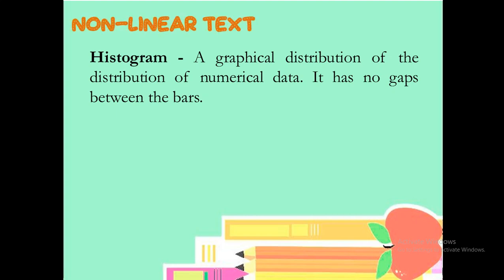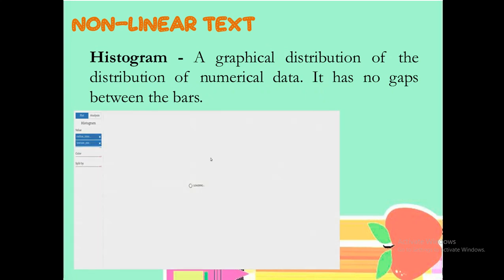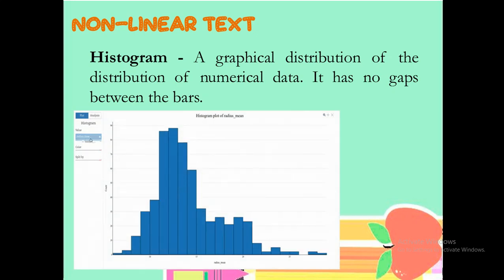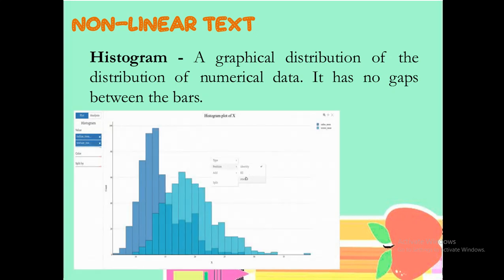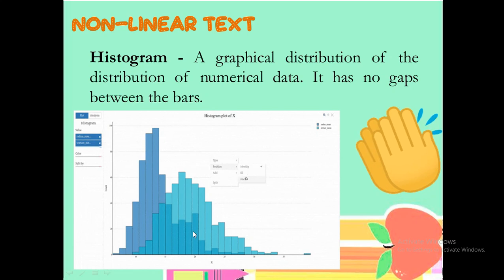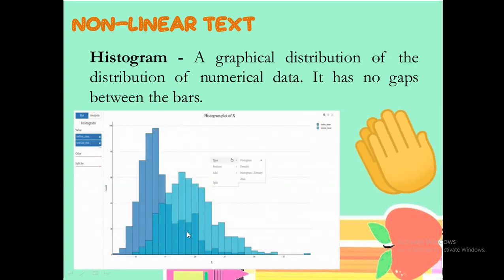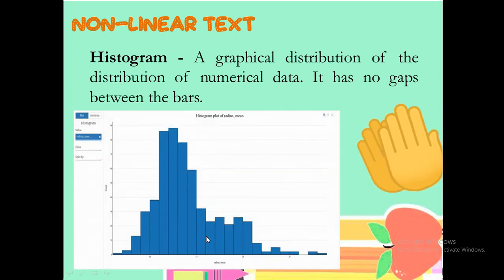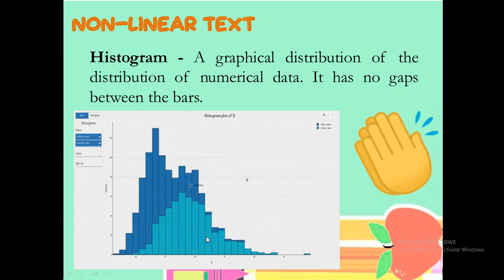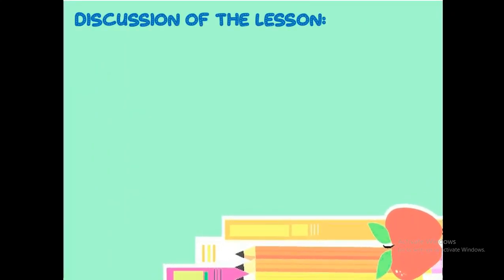We also have the histogram, a graphical distribution of numerical data. It has no gaps between the bars. The difference between histogram and the bar graph, they don't have gaps between the bars. And, as you observe on this GIF, we can actually see that we'll be using three colors and some of the colors or two colors are overlapping to each other. Therefore, that would be a trace of the history when it comes on the data. Histogram is a bit complicated compared to bar graph.